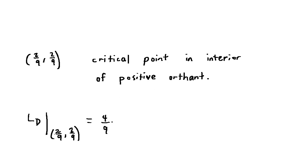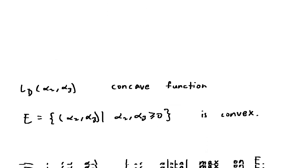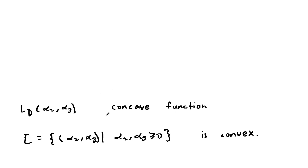L sub d evaluated there is 4/9. Using the second derivative test, we can show that L sub d of alpha has a local max at (2/9, 2/9). However, a local max of a concave function on a convex set is a global max. L sub d of (alpha2, alpha3) is a concave function, and the positive orthant, given by this, is convex.